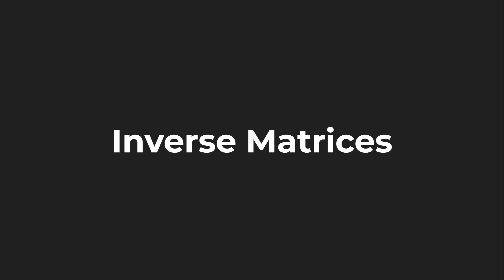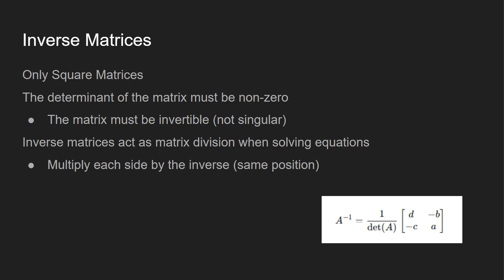A little bit more information about the inverse of matrices. You'd like to use this with square matrices, and the determinant of the matrix must be non-zero. The reason why is if we jump to this equation down below, we have one divided by the determinant — well, you can't have one divided by zero. So that's why the matrix cannot be singular; we need to be able to invert it.